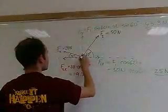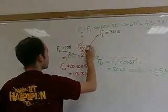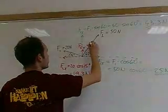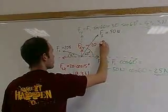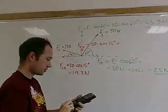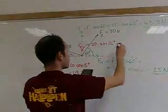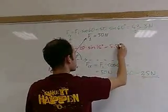Let's do F2Y, the Y component of F2, which would be 20 times sine of 15 degrees. 20 times sine of 15 degrees. We get 5.2 newtons.